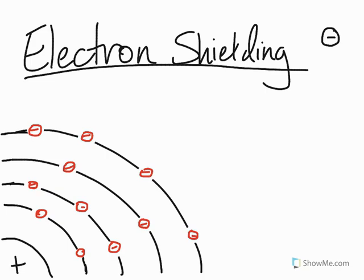Now electron shielding is actually a very simple concept. Let me just give you the definition real quick. It's the shielding effect that describes the decrease in attraction between an electron and the nucleus in any atom with more than one electron present in different electron shells.